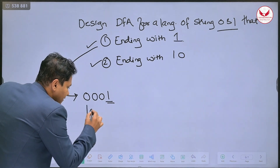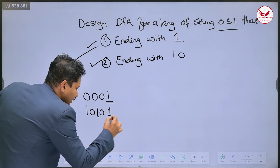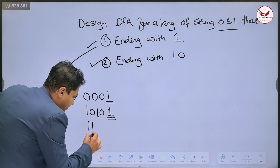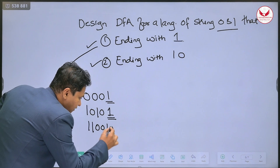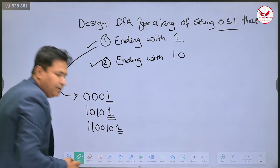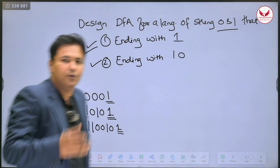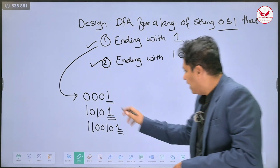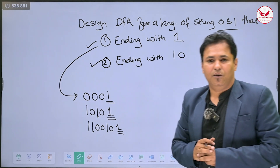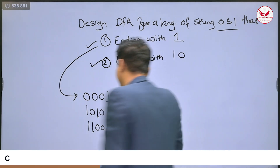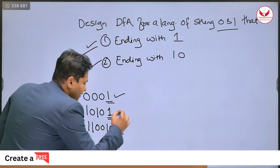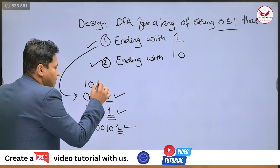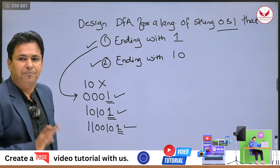It might have input like 1, 0, 1, 0 — the string is not ending with 1. Or 1, 1, 0, 0, 1, 0, 1 — again the string is ending with 1. You consider strings that are combinations of 0 and 1, and the string must always end with 1. If the string is not ending with 1, such as 1, 0, the machine should not enter into the final state.